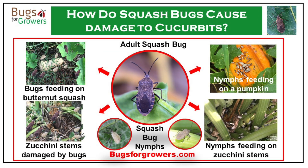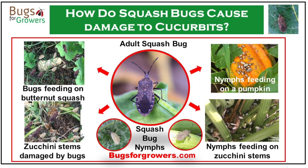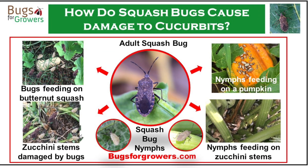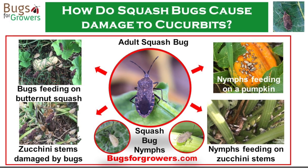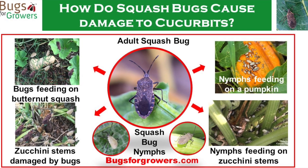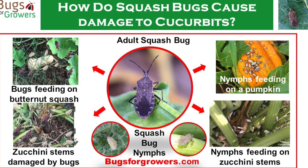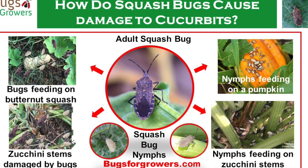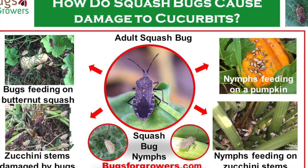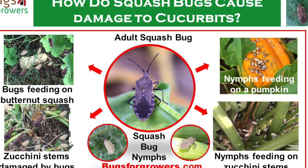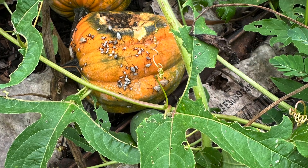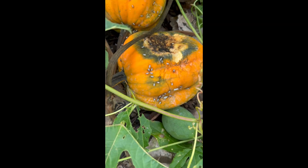Squash bugs damage cucurbits by inserting needle-like mouthparts into plant tissues and fruits, sucking out juices and injecting toxic saliva simultaneously. Severe feeding can reduce plant vigour, lower yields and eventually kill the plant. They also damage fruits, causing scars, collapse or rot.